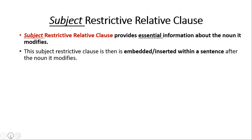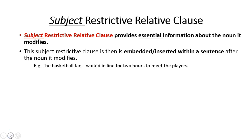A subject restrictive relative clause provides essential information about the noun it modifies. For example: 'The basketball fans waited in line for two hours to meet the players.' Here, 'basketball fans' is the subject, and I would like to restrict it to certain fans. So I'm going to embed a subject restrictive relative clause right after the subject to add essential information.